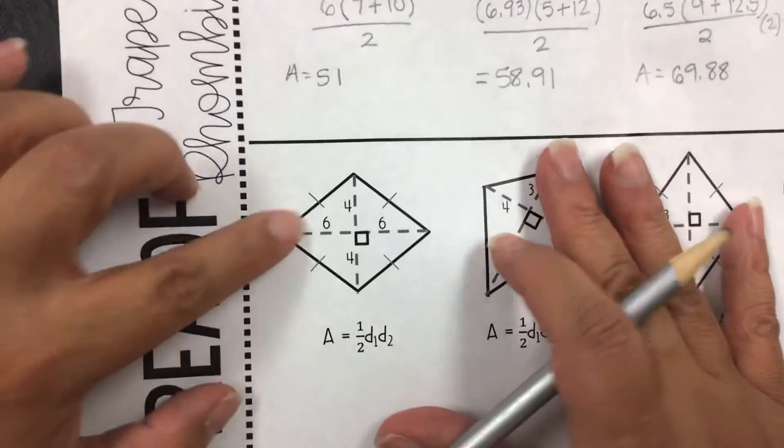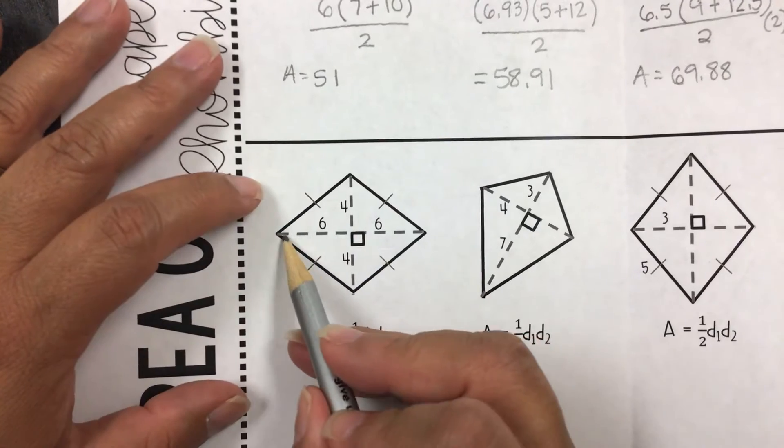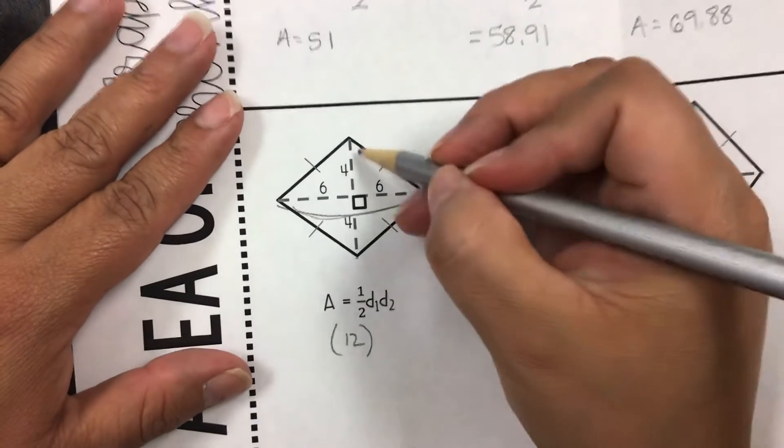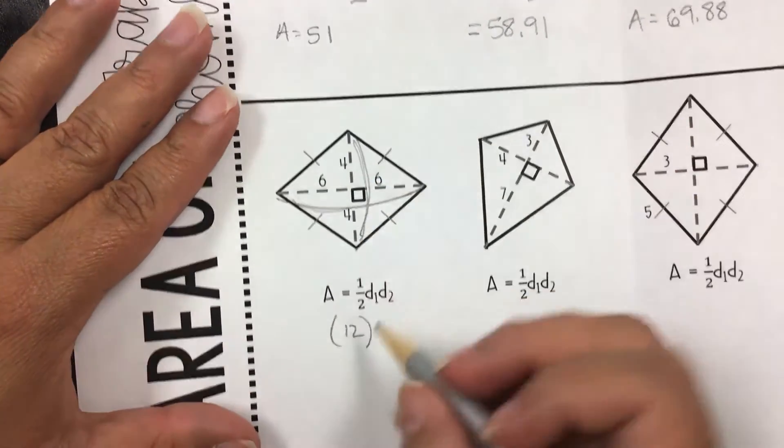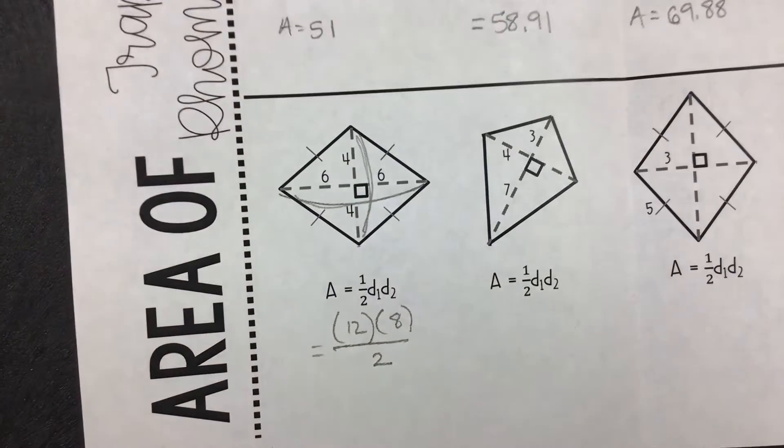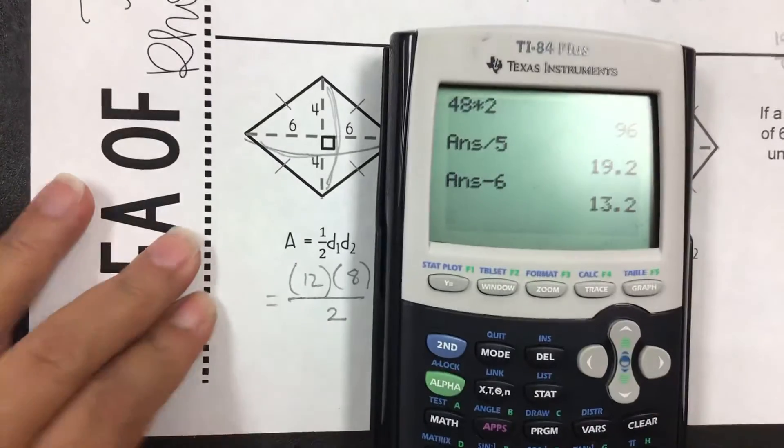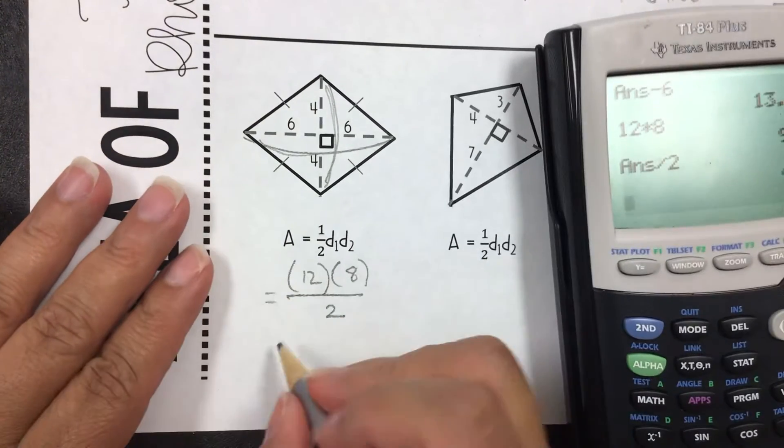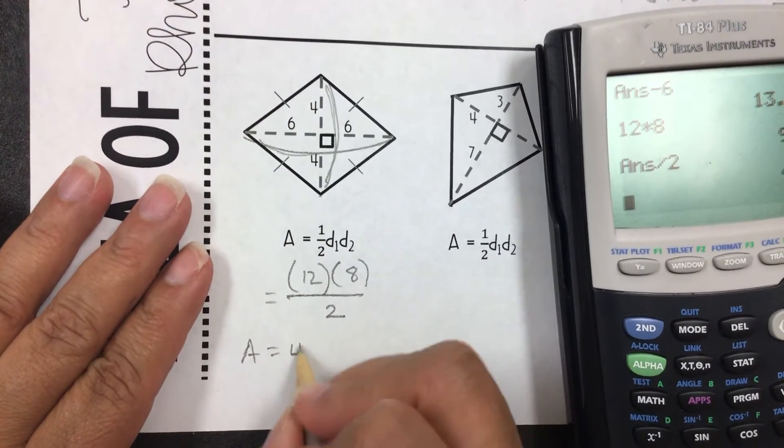So let's take a look. We got 6 plus 6, so one diagonal is 12. 4 plus 4, that means the other diagonal is 8, then divided by 2. There's no variable, so we could just say 12 times 8 and then divided by 2 is 48. That area is 48.